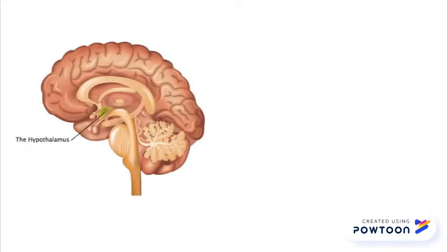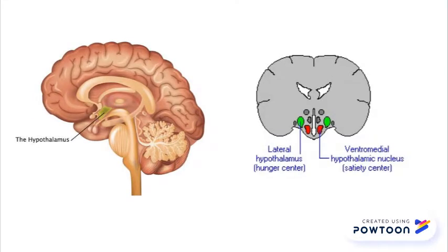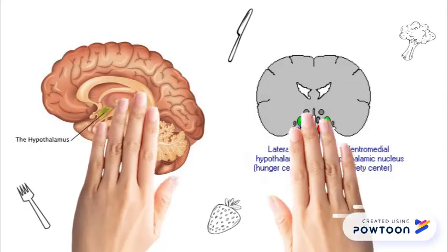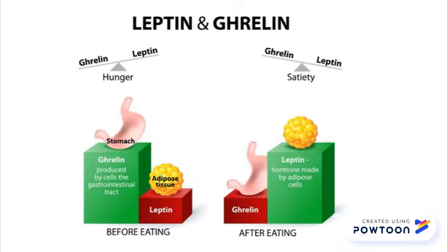There are two parts of the hypothalamus in your brain that control hunger: the appetite center and the satiety center. Your appetite is controlled by your two hunger hormones, leptin and ghrelin.